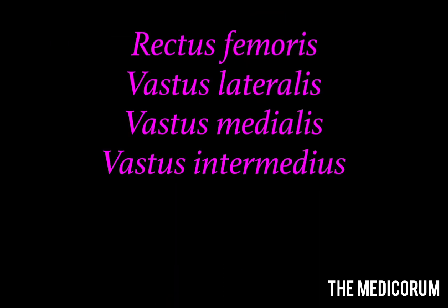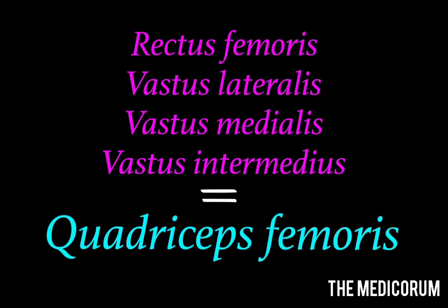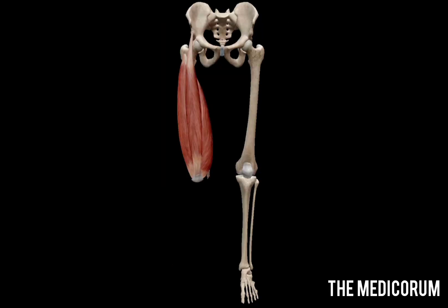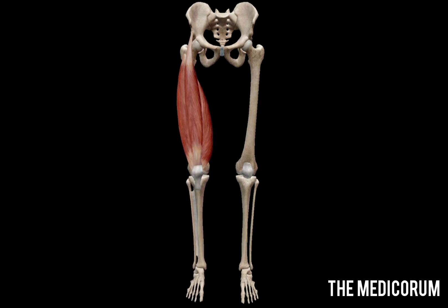Rectus femoris, vastus lateralis, vastus medialis, and vastus intermedius together form the big muscle of the anterior compartment of the thigh — the quadriceps femoris. After removing all these muscles we find a small muscle, somewhat A-shaped in appearance, known as articularis genu. The main action of all the muscles of the anterior compartment of the thigh is extension of the knee — they are the chief knee extensors.